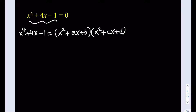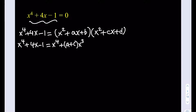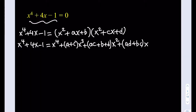Then I'm going to distribute on the right-hand side and set the coefficients equal to each other. The x cubed term gives a plus c. The x squared term gives ac plus b plus d. The x term gives ad plus bc. And the constant is bd.